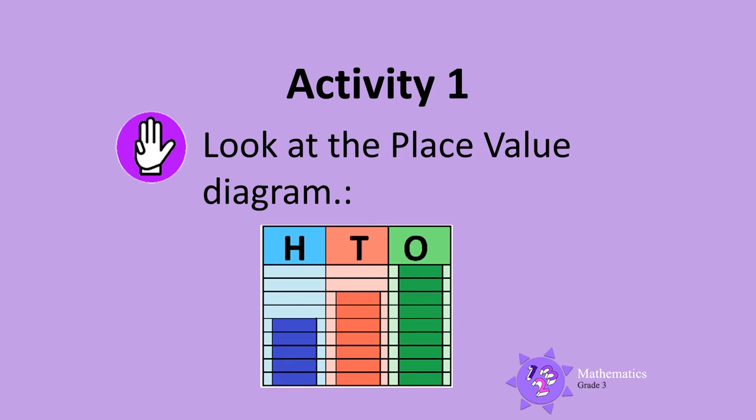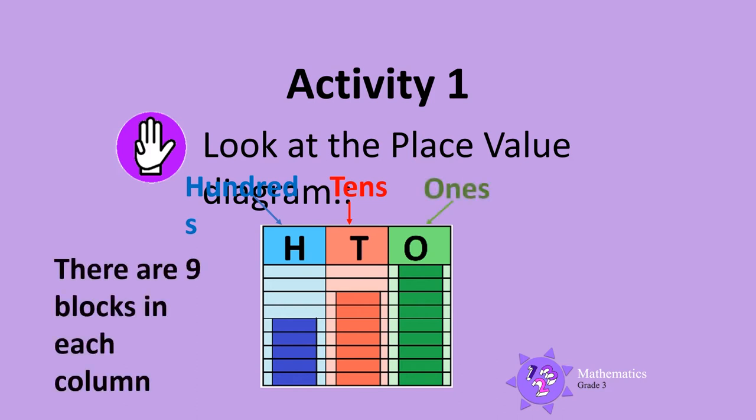Activity 1. Look at this place value diagram. This is the hundreds column, this is the tens column, and this is the ones column. There are 9 blocks in each column.